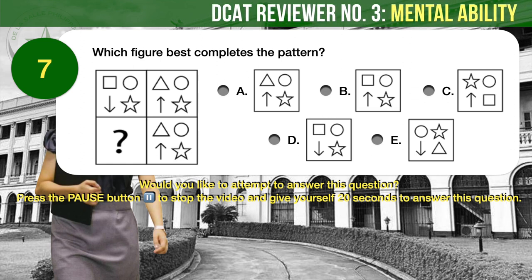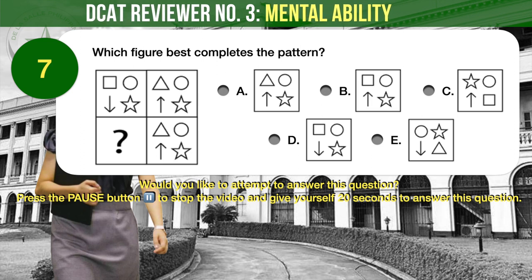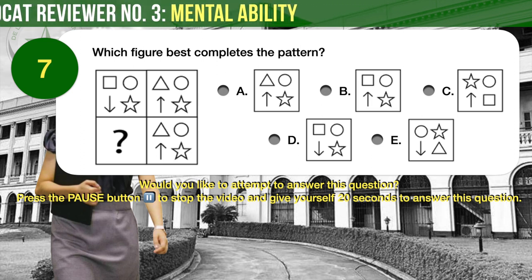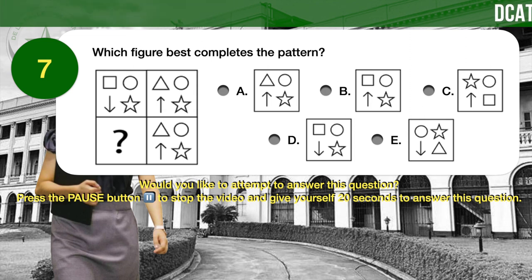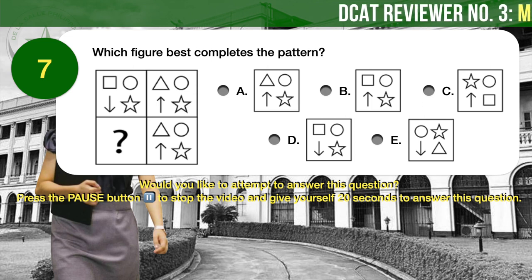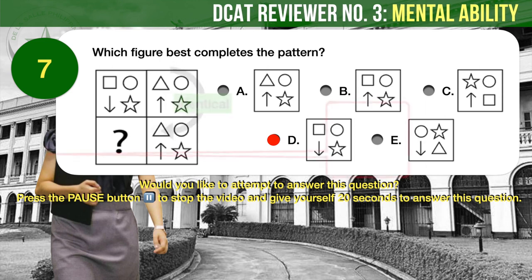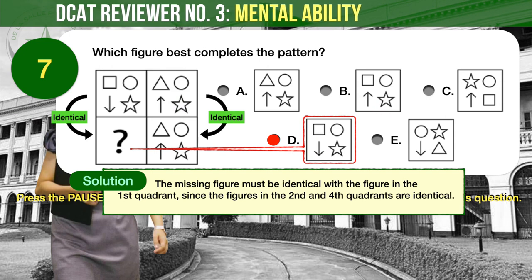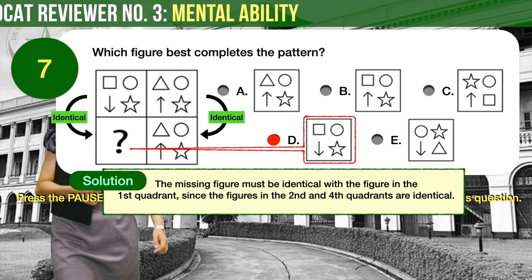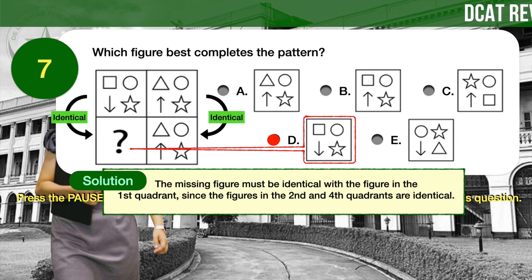Question number 7. Which figure best completes the pattern? The correct answer is D. The missing figure must have a square, circle, down arrow, and star — making it identical to the figure in the first quadrant, since the figures in the second and fourth quadrants are identical.